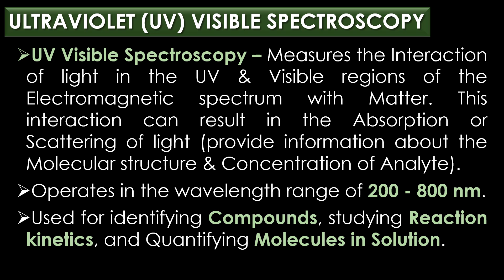UV-visible spectroscopy is a technique that measures the interaction of light in the ultraviolet and visible regions of the electromagnetic spectrum with matter. This interaction can result in the absorption or scattering of light, which can provide information about the molecular structure and concentration of the analyte. UV-visible spectroscopy operates typically in the wavelength range of 200 nm to 800 nm and is commonly used for identifying compounds, studying reaction kinetics, and quantifying molecules in solution.